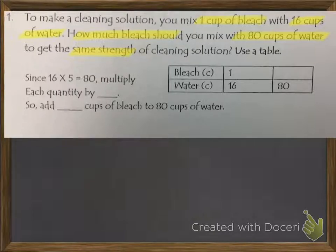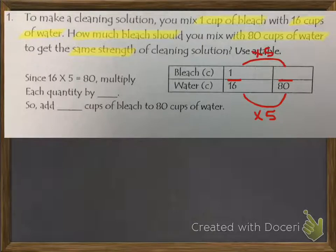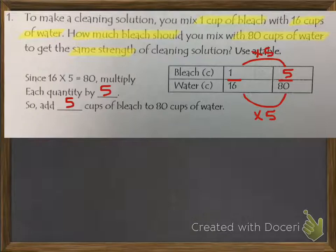Since we have 16, we have to figure out what times 16 gives us 80, and that's 5. 16 times 5 equals 80. And we can treat this like a fraction — a ratio — 1 over 16. So what we do to the denominator, we have to do to the numerator to get our answer. So 1 times 5 is 5. Therefore, we would multiply each quantity by 5, giving us 5 cups of bleach to 80 cups of water. That's because we've learned how to do proportions and ratios.